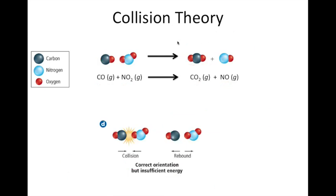Our second condition is that the molecules not only collide in the correct orientation, but also collide with sufficient energy. If they don't collide with enough energy, there won't be enough energy to break the reactant bonds that must be broken, and so the new bonds won't form — we won't form the transition state. If they collide without sufficient energy, they'll simply bounce off of each other and no chemical reaction will occur.